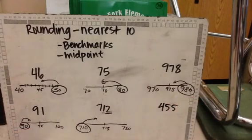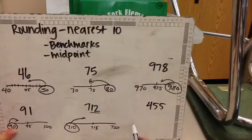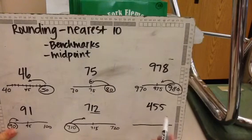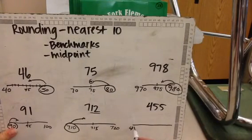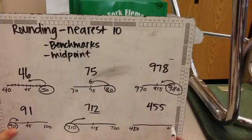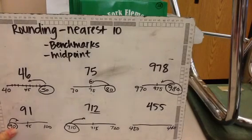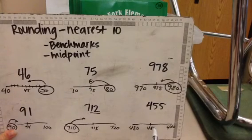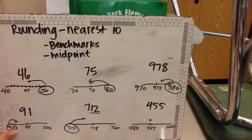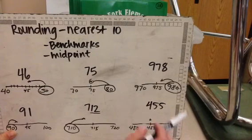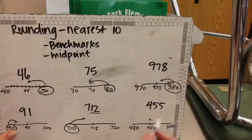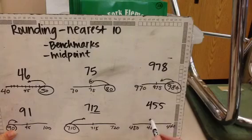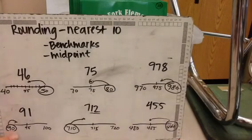And my last example: it's in the fifties, so my benchmarks are four hundred fifty and four hundred sixty. Midpoint is four hundred fifty-five. Oh, my number is the midpoint! So I got to remember that if I am the midpoint, I round up. Midpoint or greater, I round up. So this number would round to four hundred sixty.